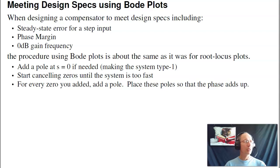If it's already type 1, you typically don't want to add a second pole because that's going to make life really hard. Second, start canceling zeros until the system's too fast. You still have the same stipulation that you had in the time domain. You can't cancel unstable poles. But you start adding zeros to cancel poles until you get a system that's faster than you need, meaning the bandwidth is wider than you need.